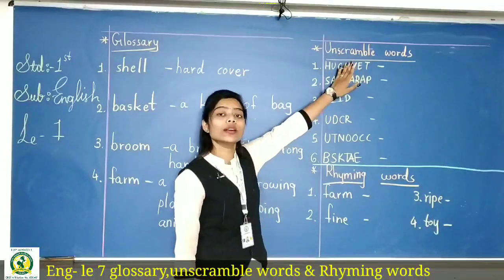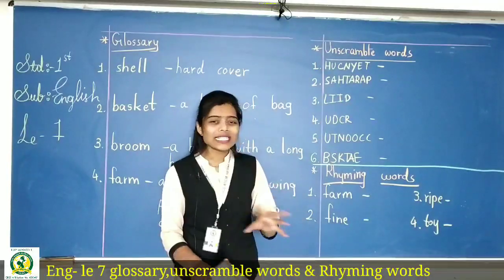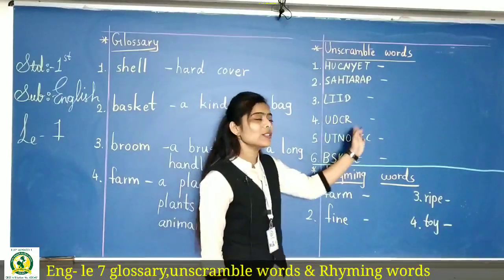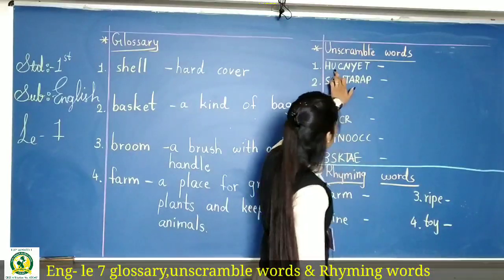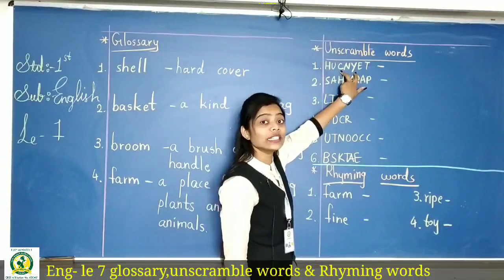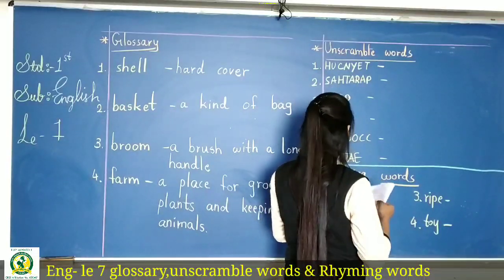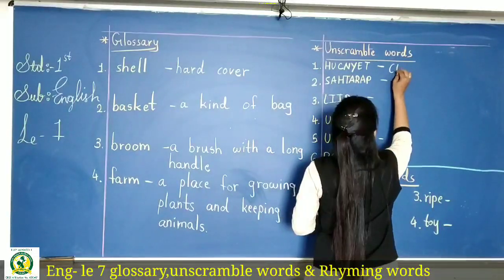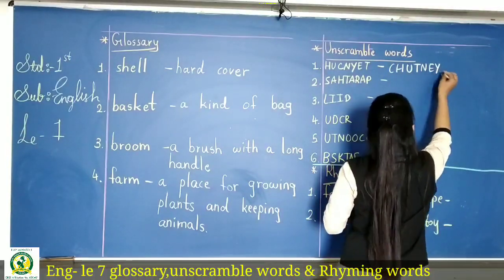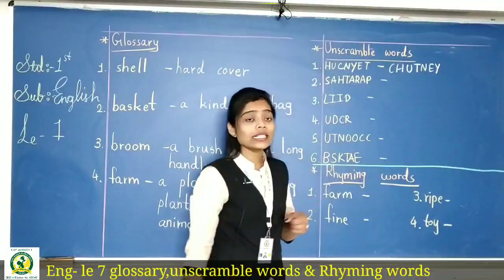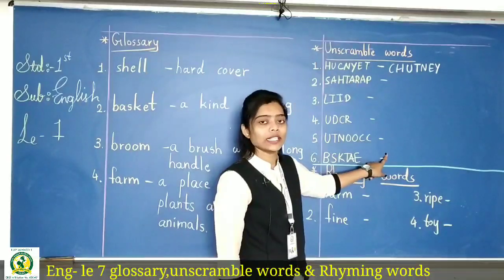Now, unscramble words are given. Unscramble kiya hua hai, hameh isko scramble karna hai — matlab sulajhana hai. Yahan pe dekhiye, is mein se kaun sa word banega? Chutney banega. Chutney — unscramble words compulsory capital letters mein likhna hai, small letters mein nahi chalega.